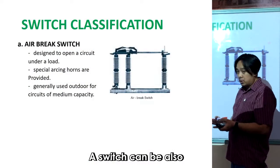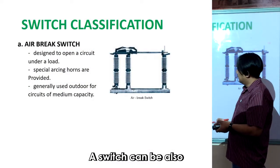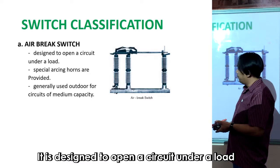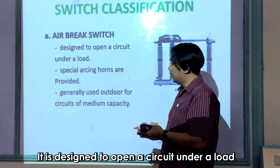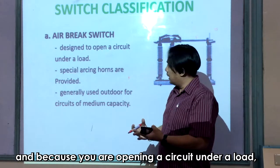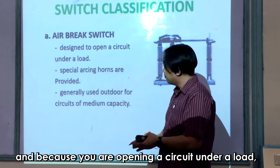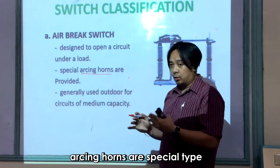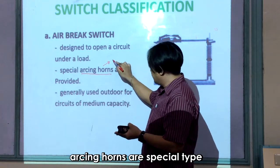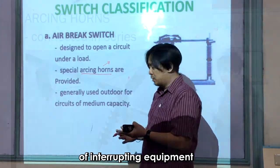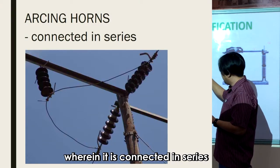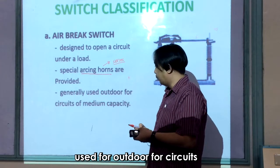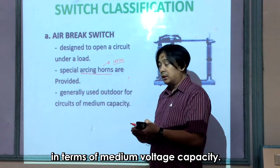A switch can also be of different types. First, we have an air-brake switch, which is designed to open a circuit under full load. Because you are opening a circuit under load, there are special arcing horns connected in series to prevent arcing phenomena. It is generally used for outdoor circuits in medium voltage capacity.